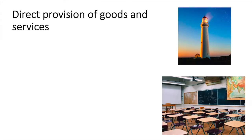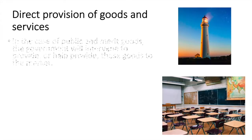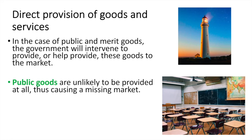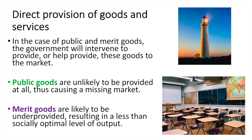Thirdly, the government can intervene directly to provide certain goods and services. In the case of public and merit goods, the government will intervene to provide or help provide these goods to the market. Public goods are unlikely to be provided at all, thus causing a missing market. Merit goods are likely to be under-provided, resulting in a less than socially optimal level of output.